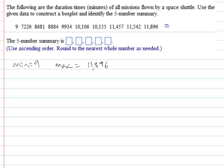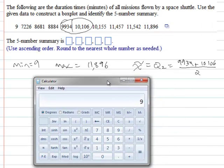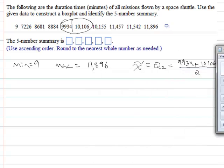There are 10 values in here so the median is going to be halfway between those two middle values. So we know x tilde or Q2 is going to be the average of 9934 and 10,106. By all means, use your calculator and see what we get. So 9934 plus 10,106, we divide that by 2, we get 10,020.